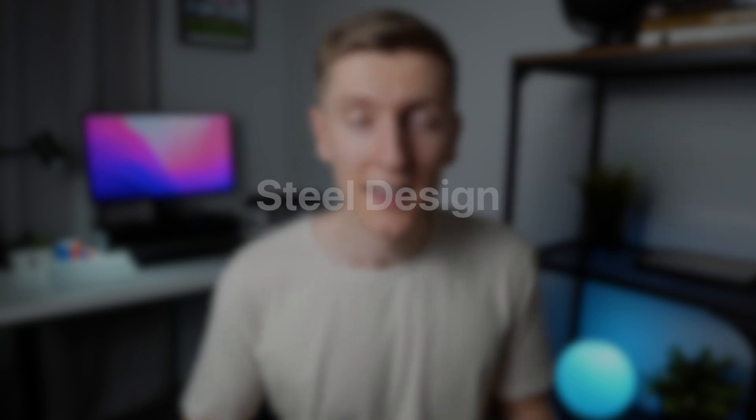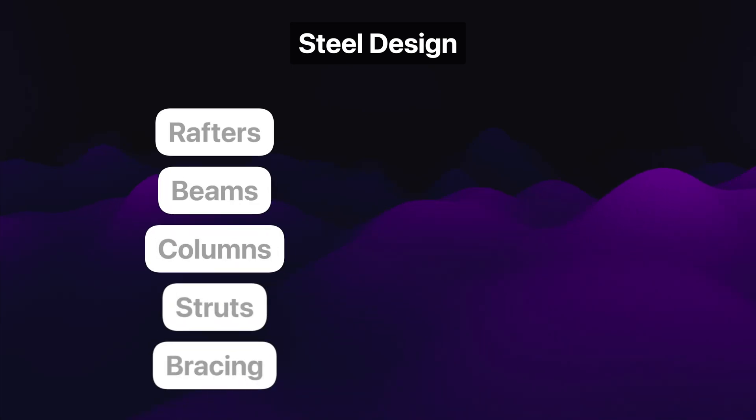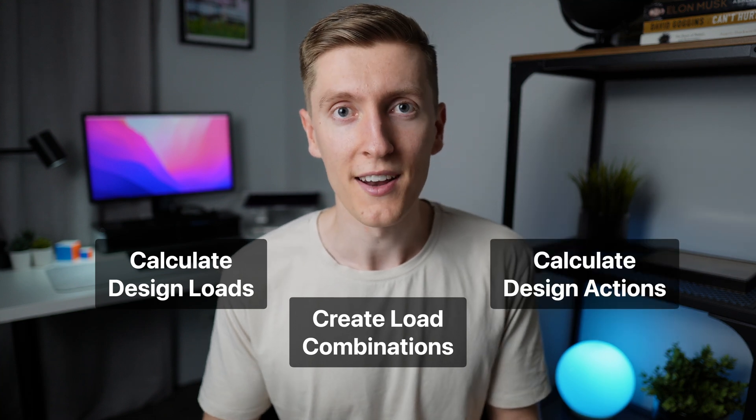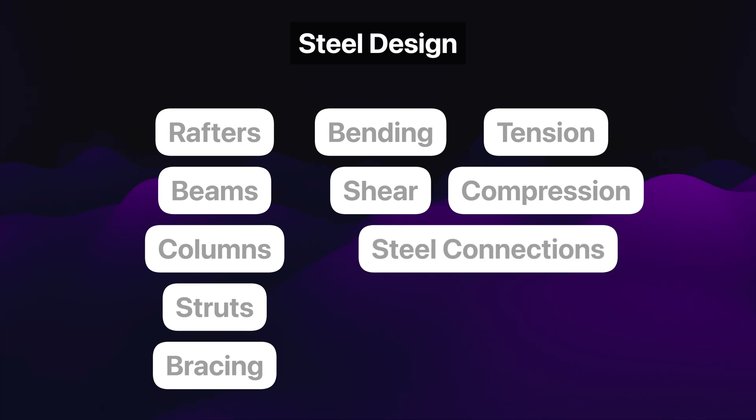The next topic is steel design — here is where you'll finally start to combine a lot of what you've learned in the first two topics and really get a taste of what a structural engineer actually does. You'll need to learn how to calculate design loads and design actions for common steel members like rafters, beams, columns, struts, and bracing, and also how to calculate the capacity of each of these members, whether in bending, shear, tension, or compression. For example, if you're designing a steel beam for a floor, you'll work out the dead and live load acting on the beam, combine this loading to get your design actions, and then determine the capacity of the beam — either through reading capacity tables or through first principles. When learning, it's good to find capacity both ways, but in reality you're only ever going to read off capacity tables.